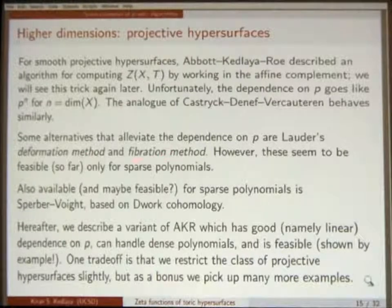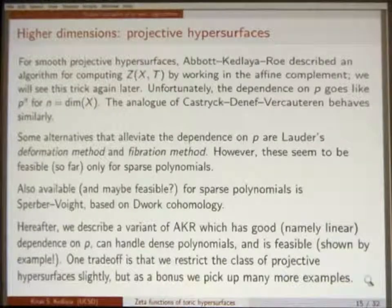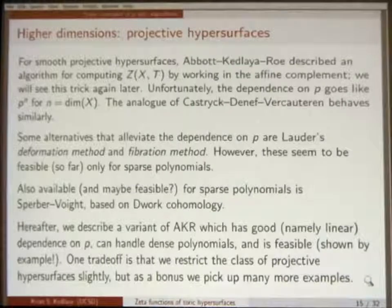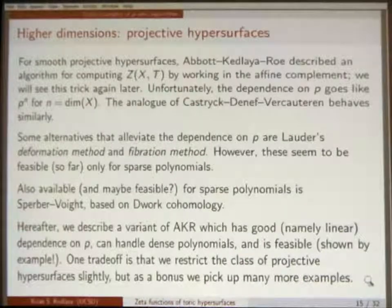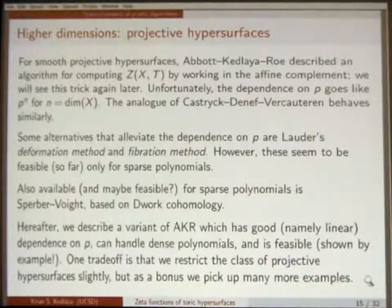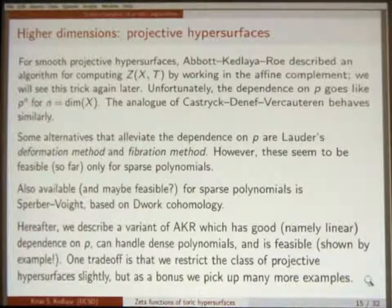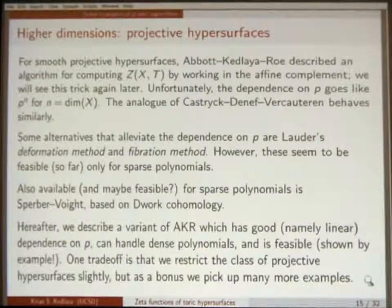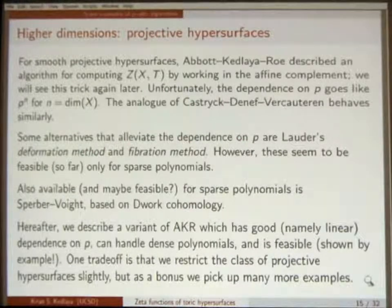The Frobenius action on the relative p-adic cohomology respects this Gauss-Manin connection, satisfying some differential equation which, once you have an initial condition, you can solve. That gives a good algorithm depending on how many singularities the connection has. As the degree of the hypersurface goes up, the connection requires more singularities, so the performance degrades. When the polynomial is sparse, you get fewer singularities, so that helps.